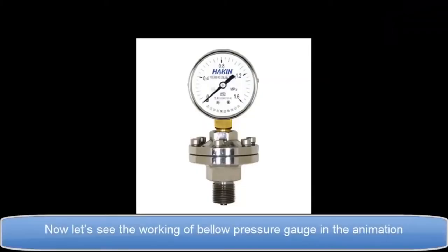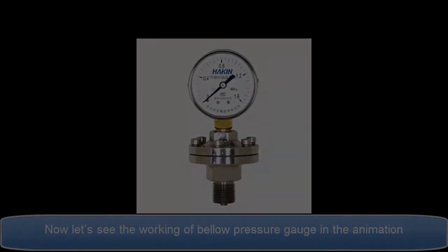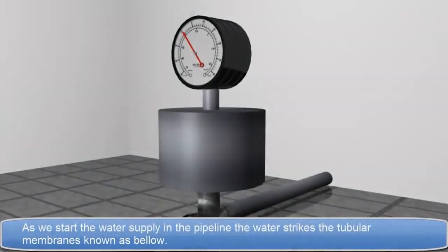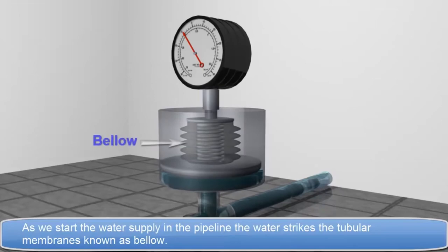Now let's see the working of the Bellow Pressure Gauge in the animation. As we start the water supply in the pipeline, the water strikes the tubular membranes known as Bellow.